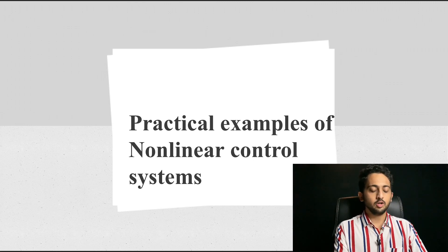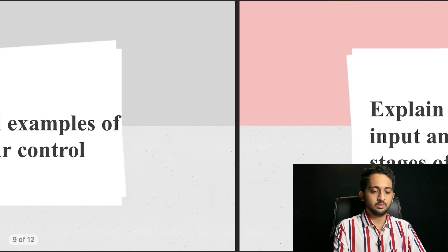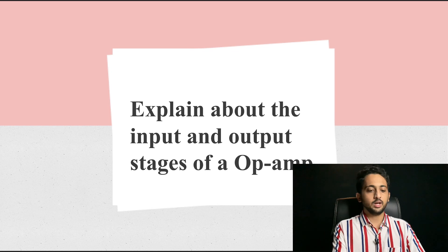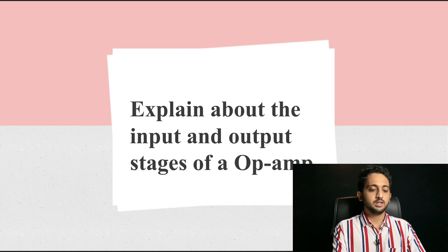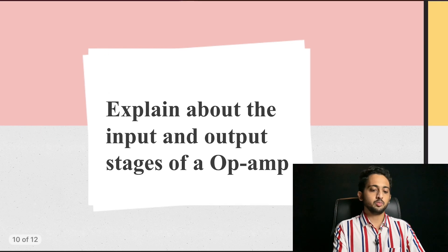So if you are listing control systems as a favorite subject, go through non-linear control systems as well because they may ask a lot of questions on that topic. Coming to analog circuits, they asked me to explain the input and output stages of an op-amp. Generally there are four stages in the op-amp internal circuit and they asked me to explain the input and output stages specifically.